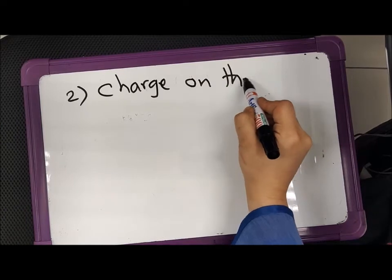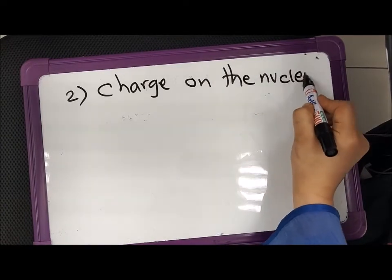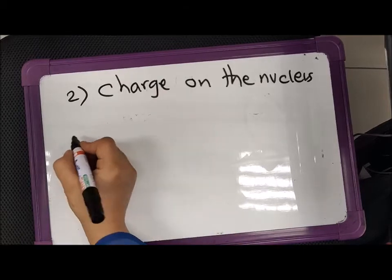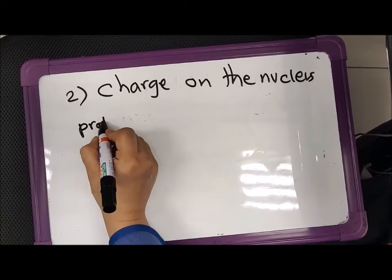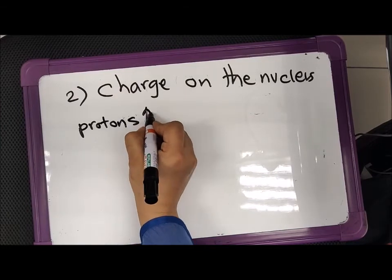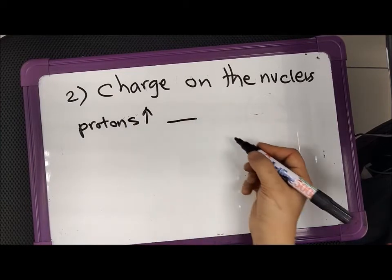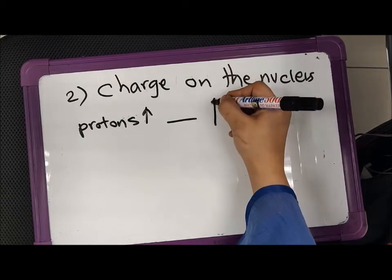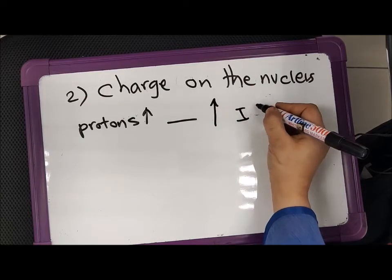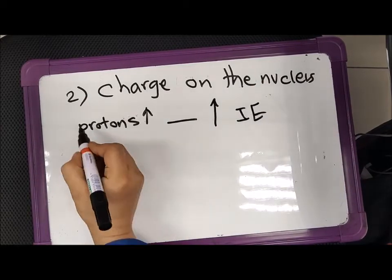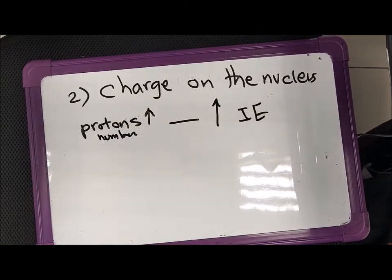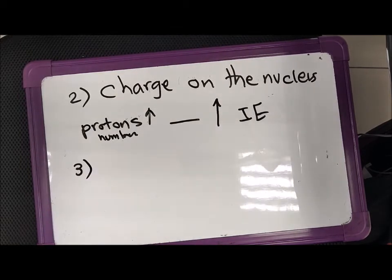If the atomic radius increases and becomes bigger, then the amount of force of attraction between the nucleus and the electrons decreases, so you need less ionization energy. So once this distance becomes bigger, the ionization energy is smaller. The second factor which affects ionization energy is the charge on the nucleus — meaning the greater the number of protons.